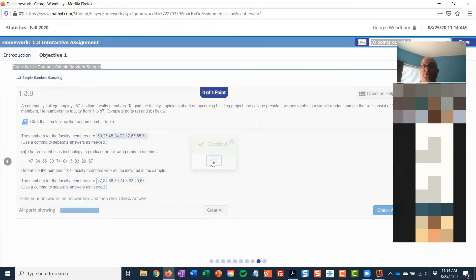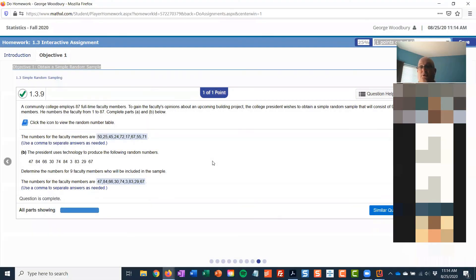So that's how we use the random digit table to pick a sample from a population where we have them numbered. One thing that didn't come up is if the first digit's a zero, like you had 07, that's the number 7. We ignore the zero at the beginning.